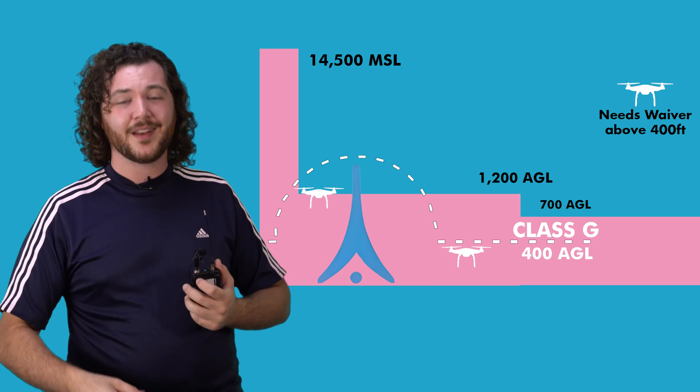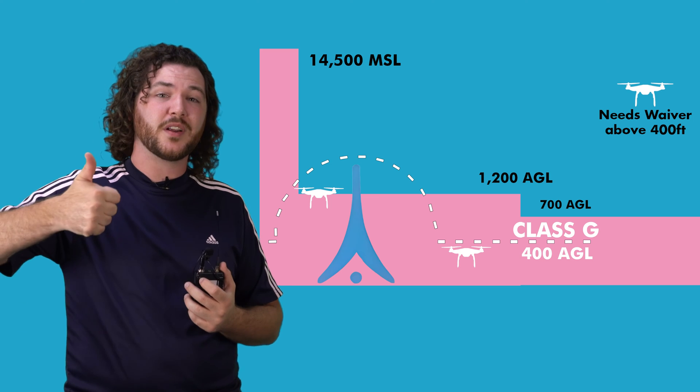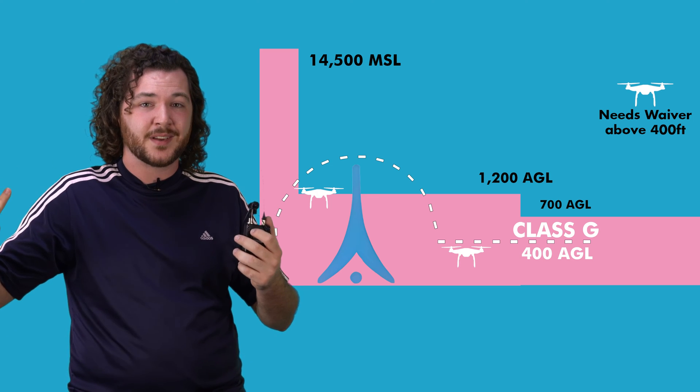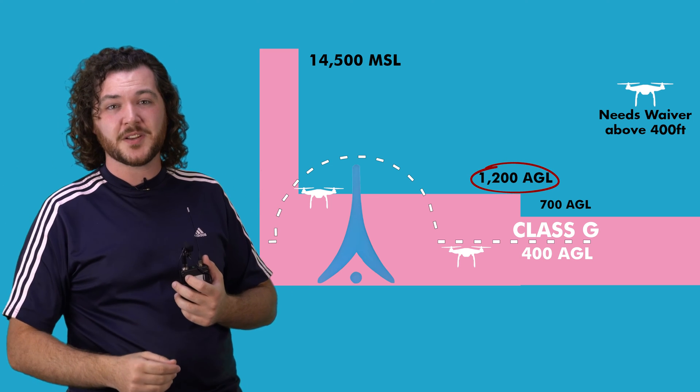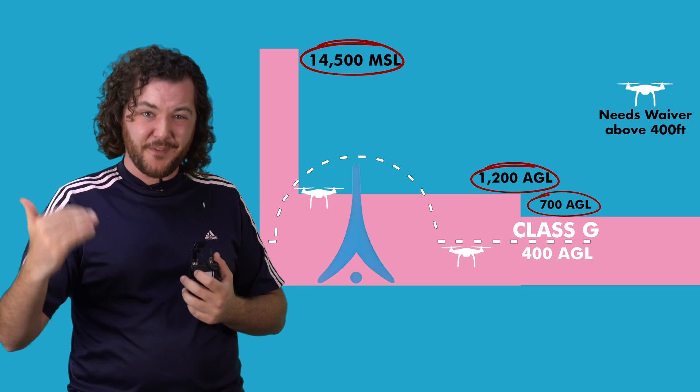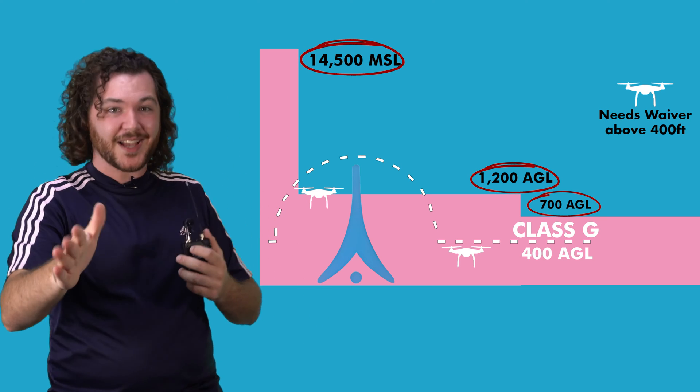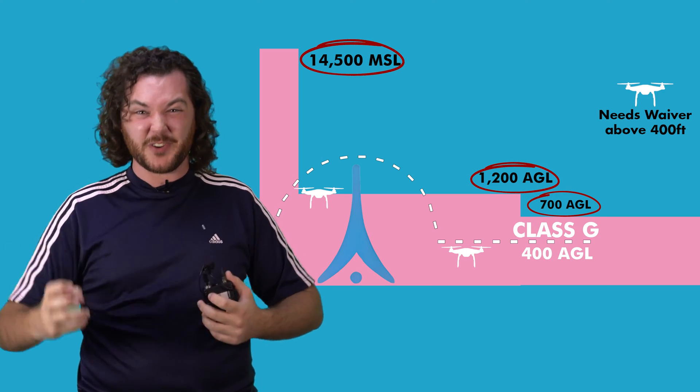And finally, we come to Class G airspace, the one that drone pilots will fly in 99% of the time. Class G starts at the surface level and extends skyward to wherever Class E airspace begins — whether that's the usual 1,200 feet, 700 feet, or even 14,500 feet MSL. You'll usually only find this over mountains or sparsely populated areas like Montana or Alaska, but sectional charts show this extension with a gradient blue line, where the darker side of the gradient represents the side where the Class G airspace extends upward.